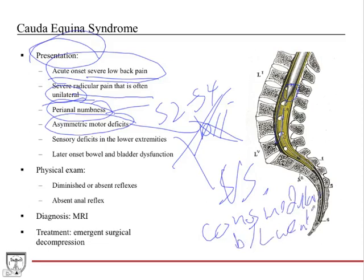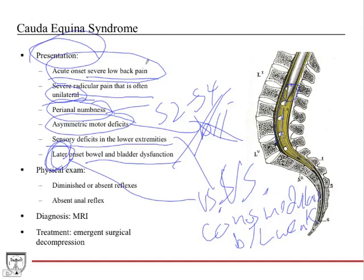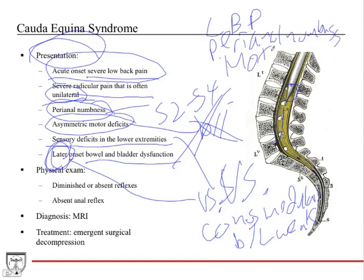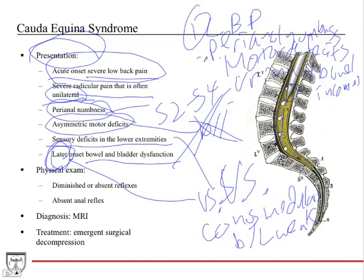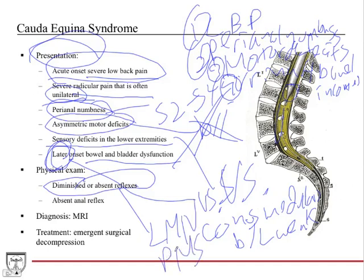The four main things to know about cauda equina syndrome: low back pain, perianal numbness, motor deficits in the lower extremities, and urinary/bowel incontinence — with later onset of bowel and bladder dysfunction compared to conus medullaris syndrome. On physical exam, there are diminished or absent reflexes — this is a lower motor neuron lesion because it's a peripheral nervous system lesion, so it's hyporeflexic, not hyperreflexic. Absent anal reflex is also present because the S2-S4 nerves are affected.